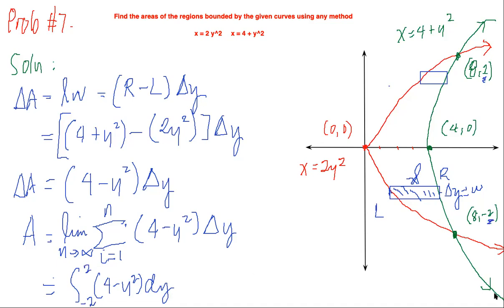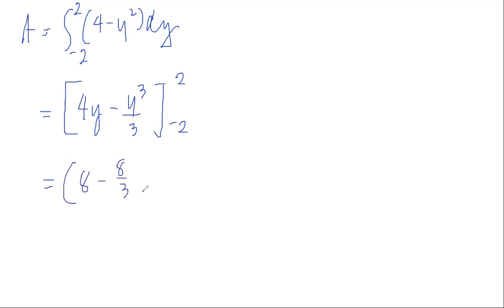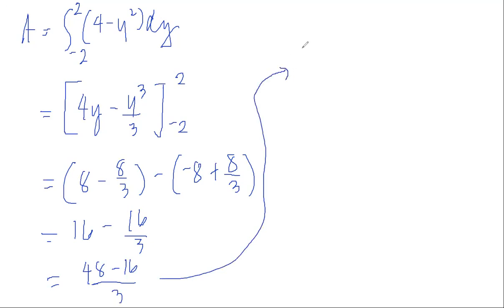Let's solve this. Our area equals the integral of 4 minus y squared dy from negative 2 to positive 2. Let's integrate. So this becomes 4y minus y cubed over 3 from negative 2 to 2. Let's evaluate using the upper limit, so 8 minus 8 over 3 minus negative 8 plus 8 over 3. This becomes 16 minus 16 over 3, which is 48 minus 16 over 3, which turns to 32 over 3 square units.